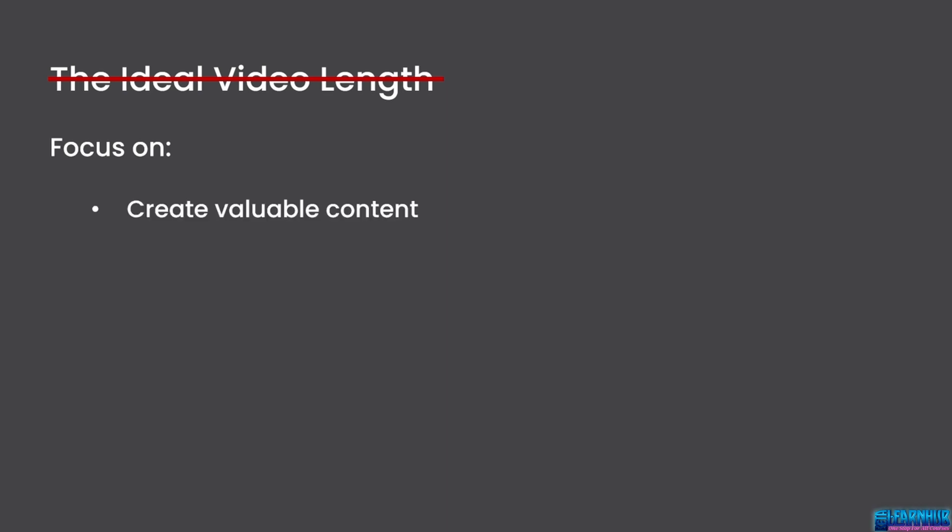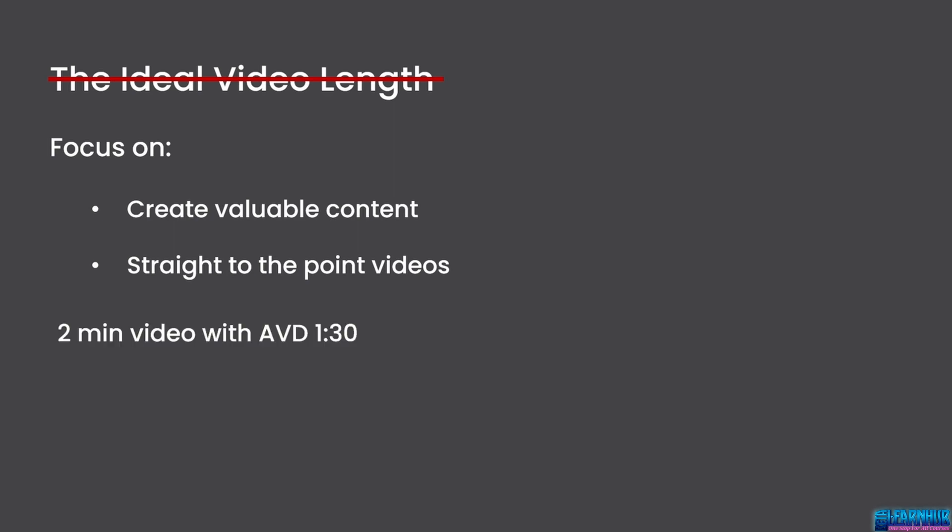The ideal length of a video can be 2 minutes, 5 minutes, 10 minutes, or even more — there's no such thing as ideal. You should be focusing on creating high-value content so people can click and watch your video till the end. Try not to make a video longer just for the sake of being longer. A 2-minute video with an average view duration of a minute and a half will get suggested by the algorithm significantly more than a 10-minute video with an average view duration of 2 minutes, because it retains viewers for a longer portion and tells YouTube the audience enjoyed it more.